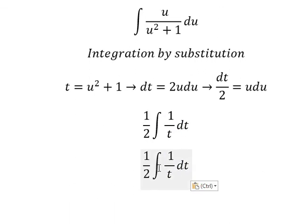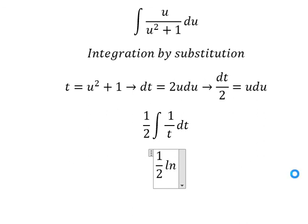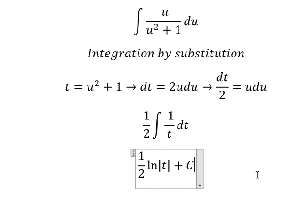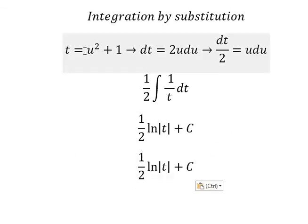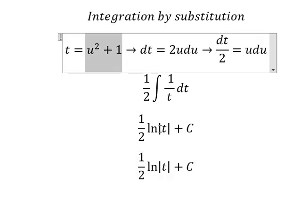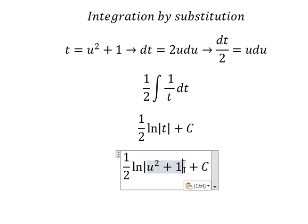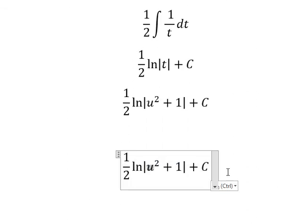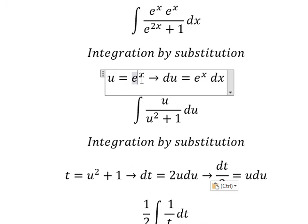The integration of this one we have ln of the absolute value of t, and I will put C. For t that is this one, for u that is this one.